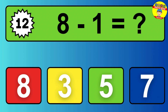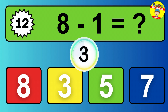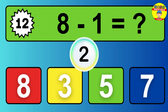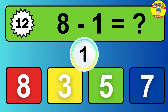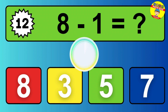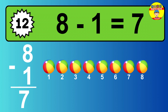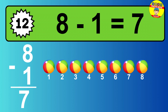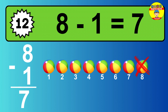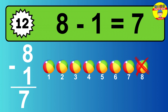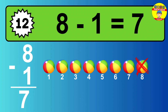Question twelve. Eight minus one equals what? So the answer is, eight minus one is seven. Let's count it. One, two, three, four, five, six, seven.